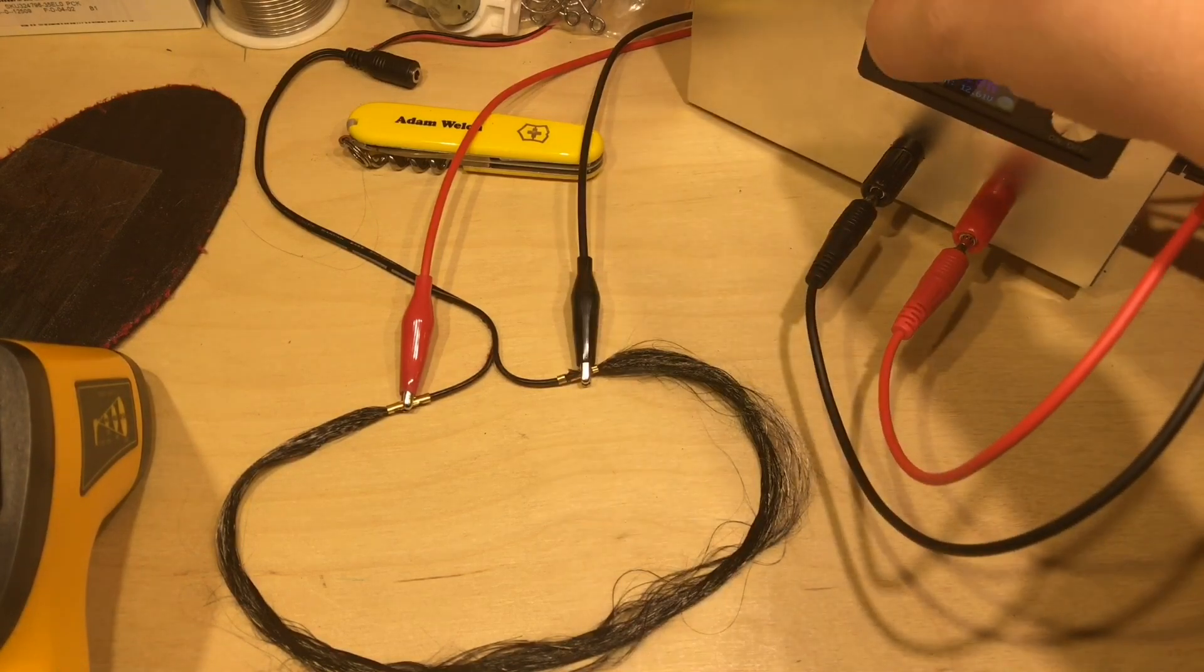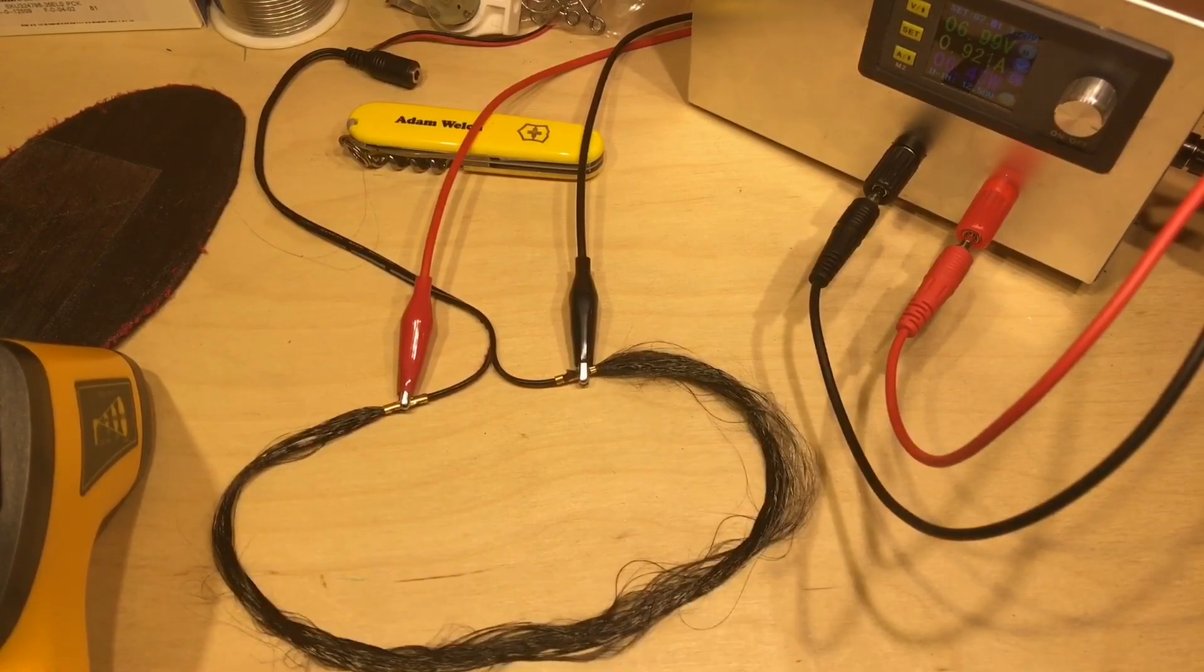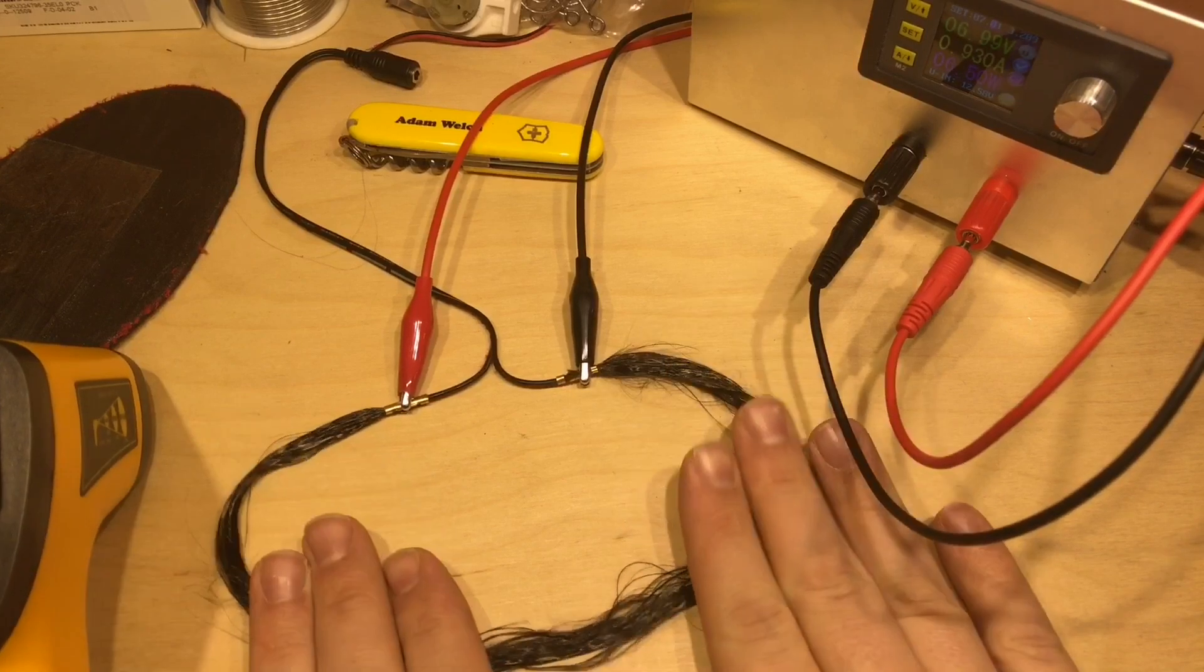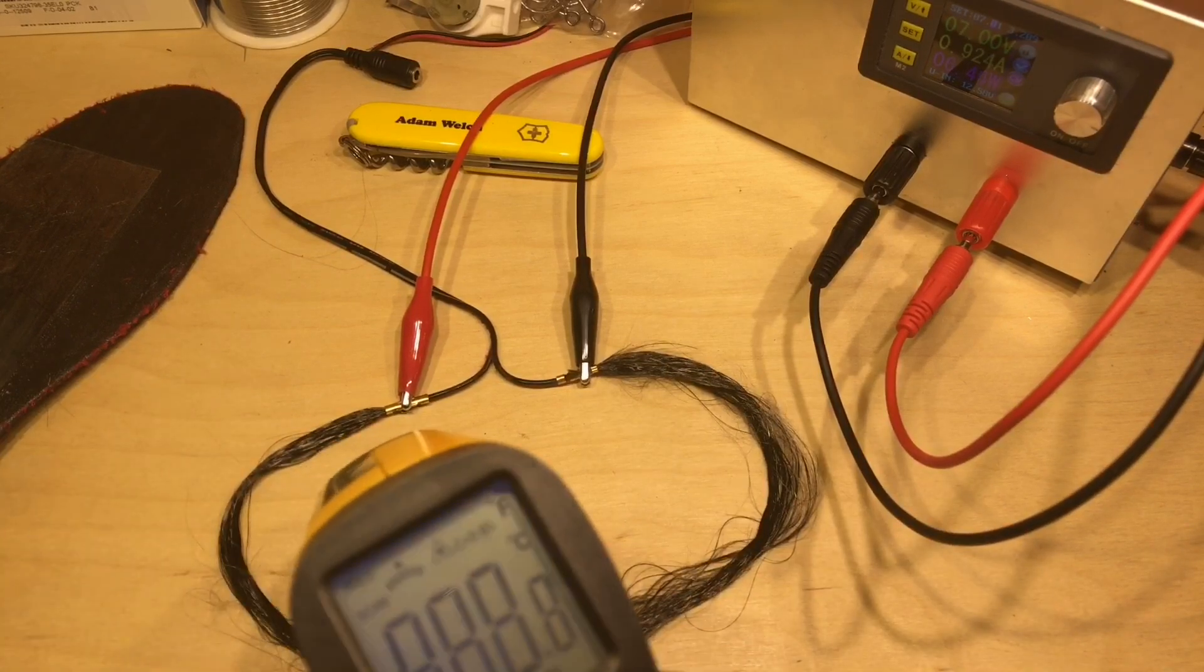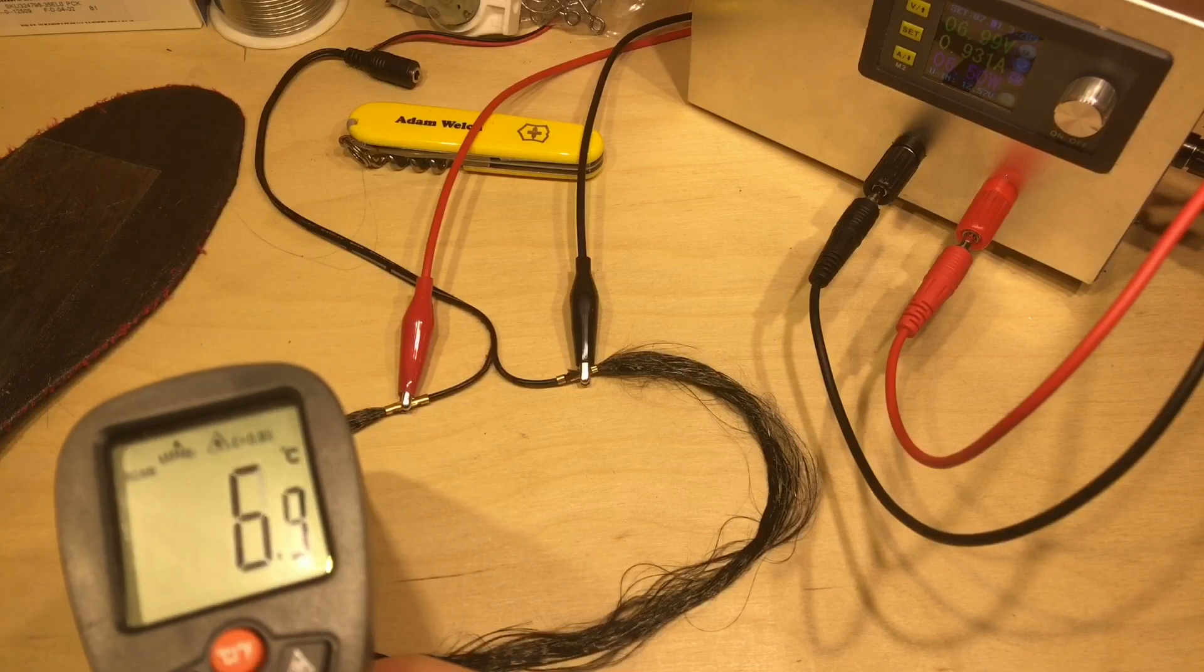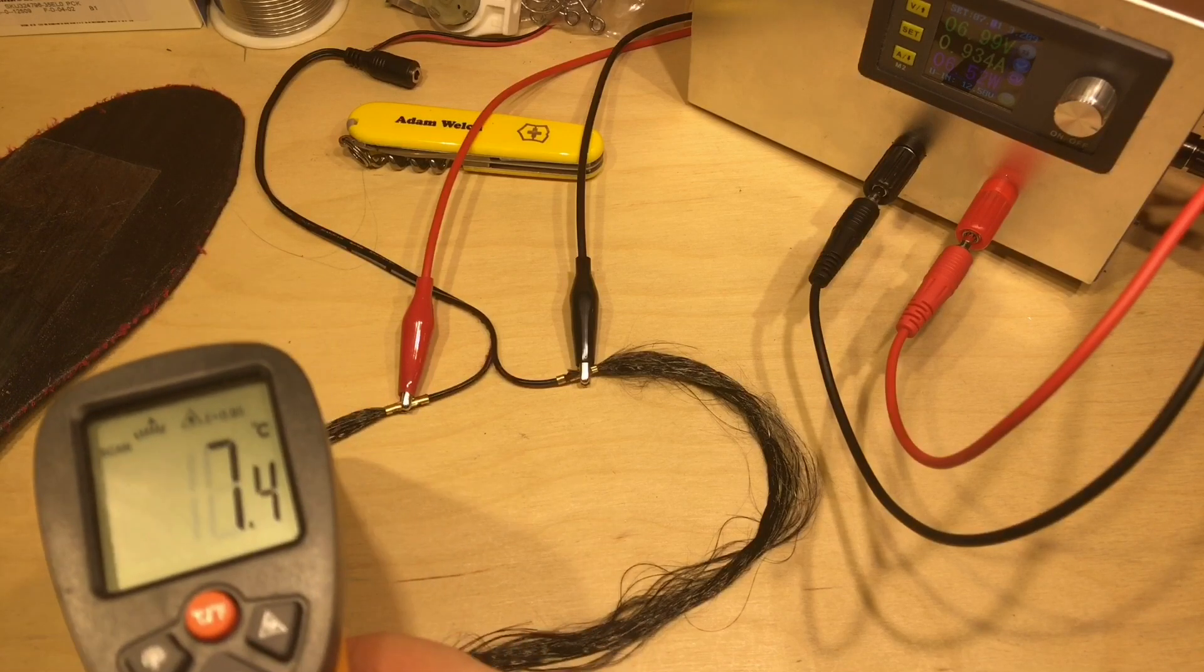So let's crank the voltage up a bit. 7 volts, we're now pulling 6.4 watts, just under an amp, and I can actually feel some heat there now, and if we find the right point, 20, 22.